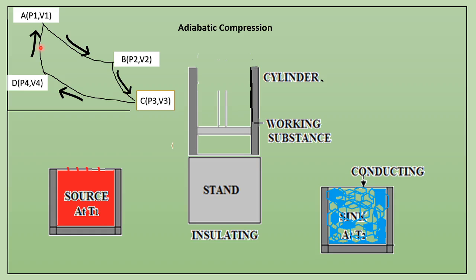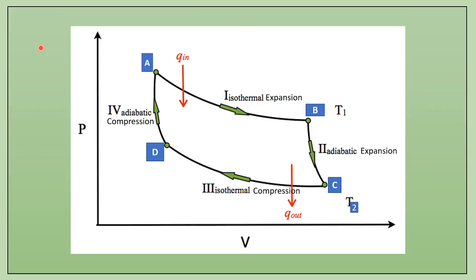The efficiency of this Carnot engine depends on the temperatures of both reservoirs. Let us see all four stages again. Initial state A undergoes isothermal expansion at temperature T1, reaching state B where pressure decreases and volume increases. B to C is adiabatic expansion where temperature reduces to T2. C to D is isothermal compression at T2 where volume reduces and pressure increases. D to A is adiabatic compression back to original state. This is the complete cycle called Carnot cycle. Efficiency equals 1 minus T2 by T1, where T1 is the hot reservoir temperature and T2 is the cold reservoir temperature.